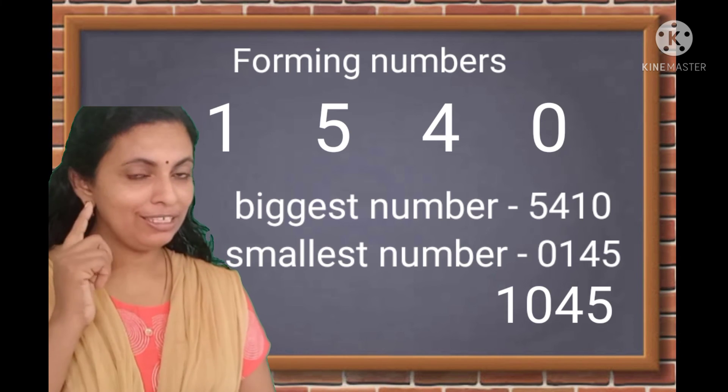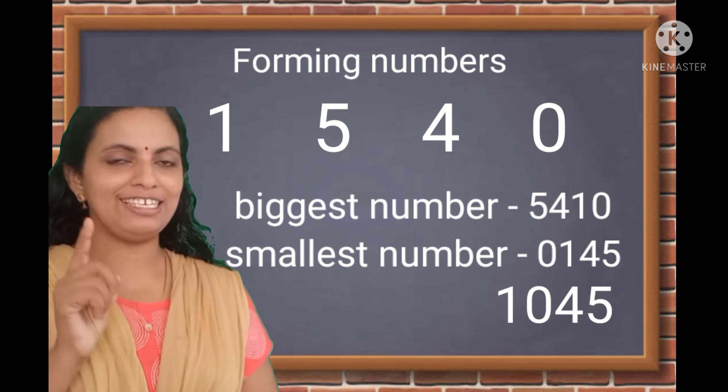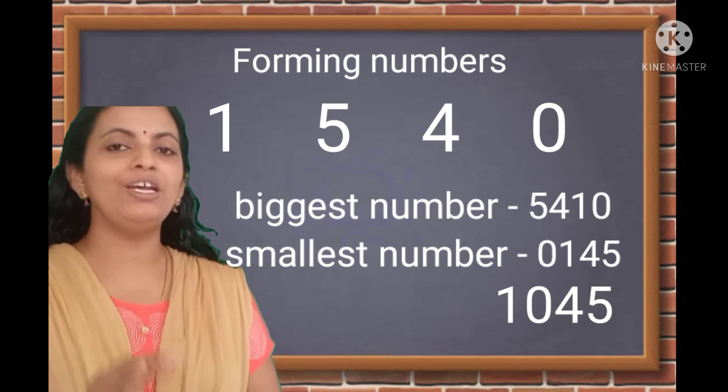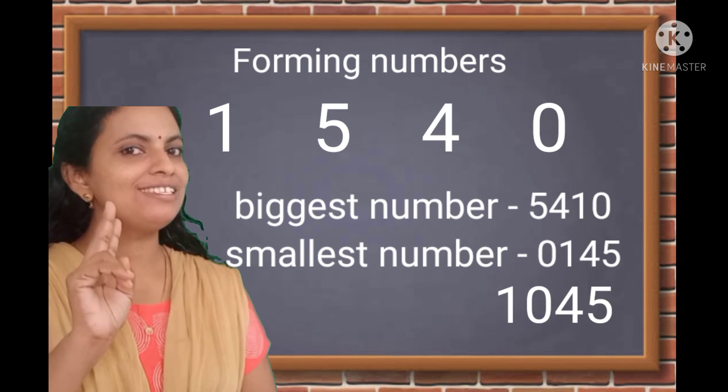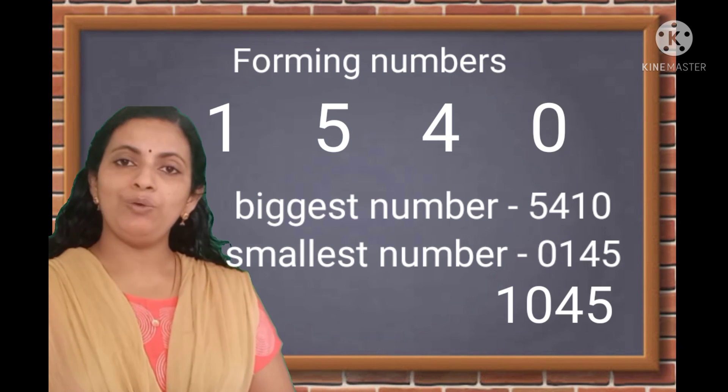So, keep in mind, if 0 is one of the digits, when we form the smallest number, we have to keep it in the second place. Now, are you ready?